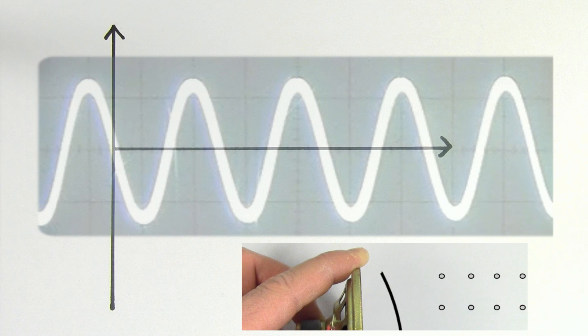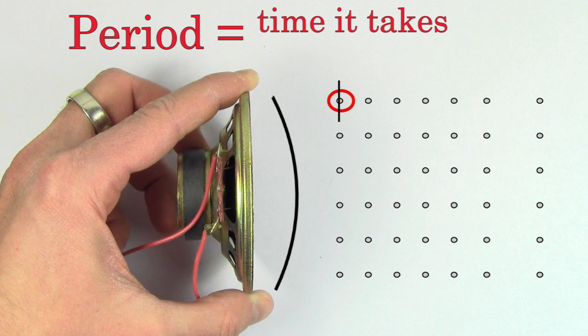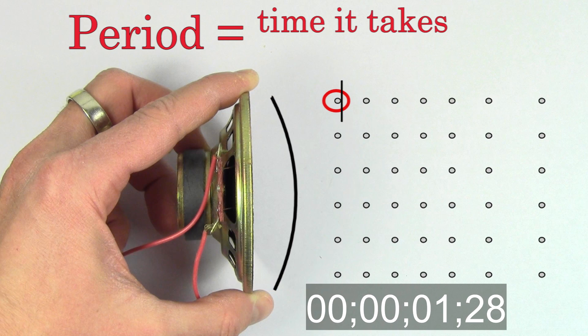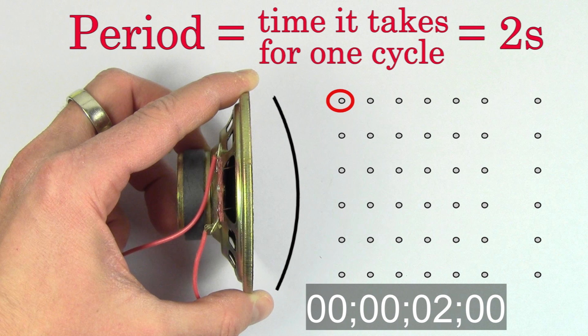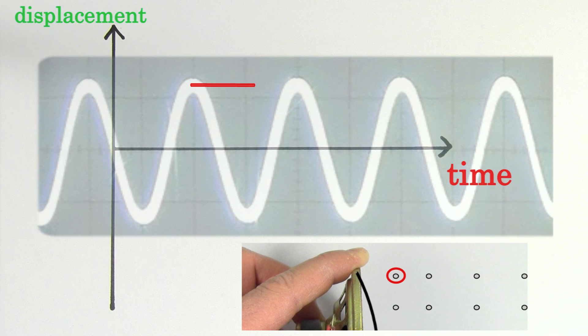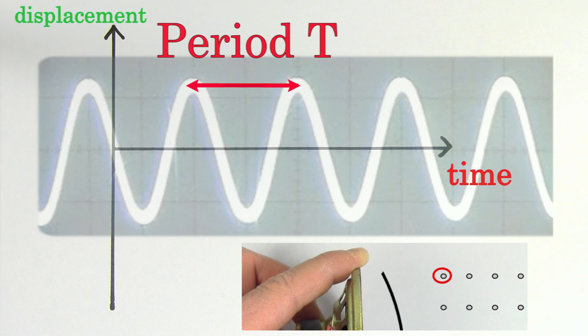Another key idea is the period of a sound wave. The period is defined to be the time it takes for an air molecule to fully move back and forth one time. We call this back and forth motion a cycle. We measure the period in seconds. So the period is the number of seconds it takes for one cycle. We use the letter capital T to represent the period.